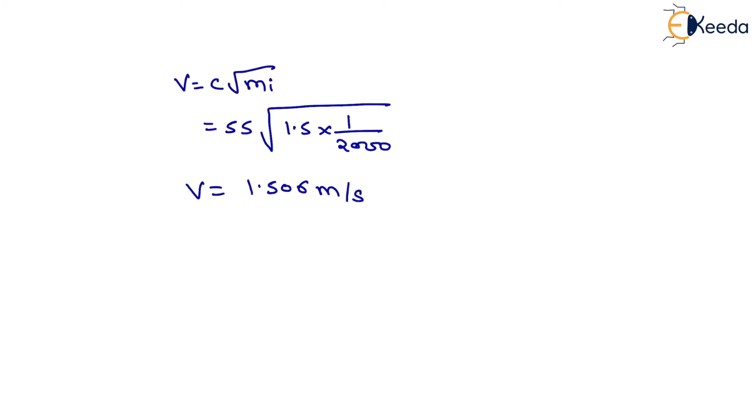Now we have to find the value of rate of flow, that is discharge, which will be equals to velocity into area. Therefore, it will be equals to 1.506 into 18. On solving this, we will have discharge equals to 27.108 meter cube per second.